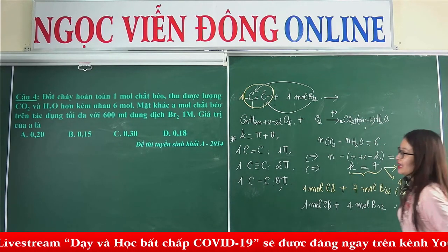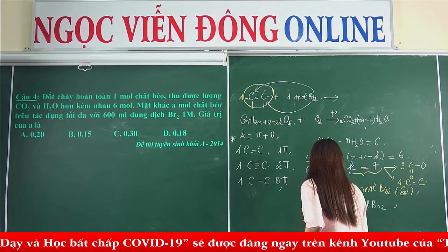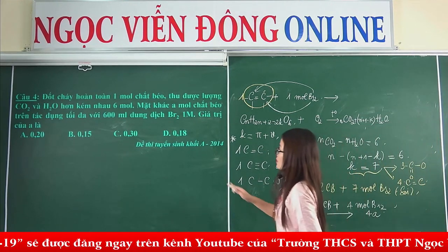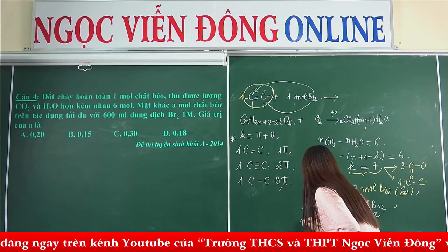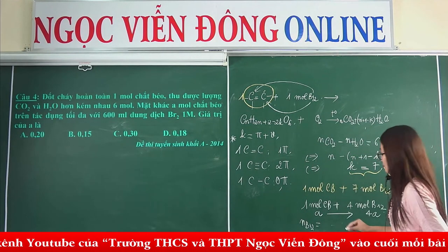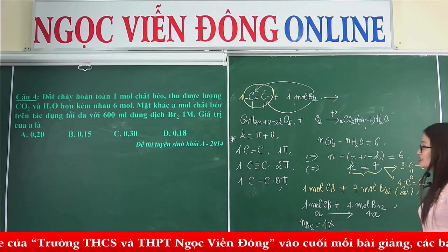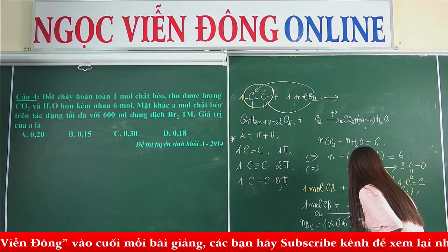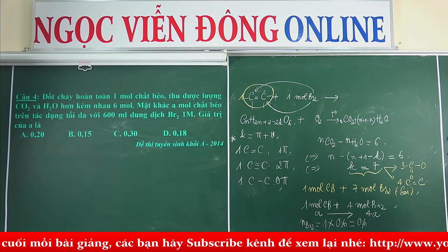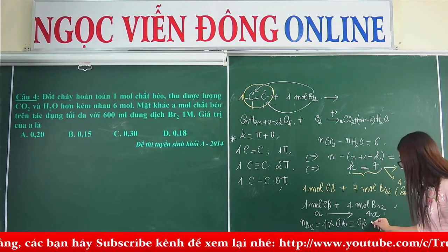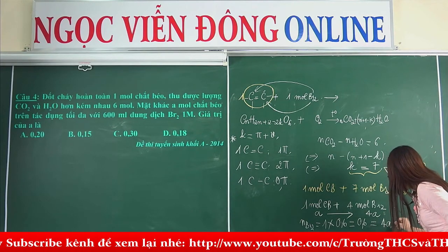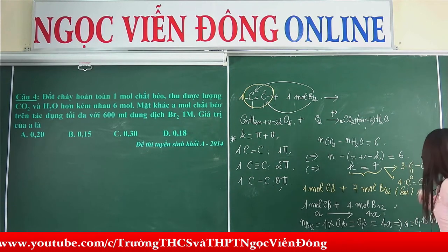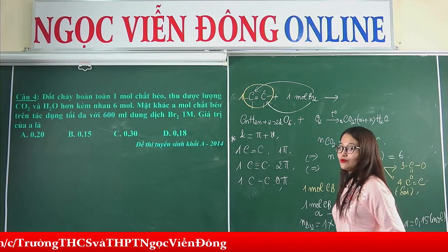Chất béo của chúng ta là A mol, suy ra số mol bromine phản ứng là 4A. Số mol bromine bằng nồng độ nhân thể tích: 1 × 0,6L = 0,6 mol. Theo phương trình: 0,6 = 4A, suy ra A = 0,15. Vậy đối với câu hỏi số 4 thì đáp án đúng là đáp án B.